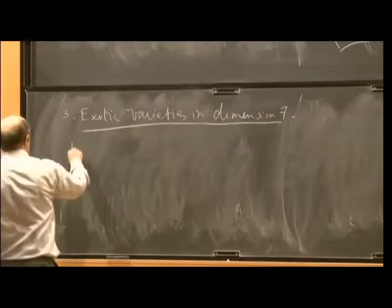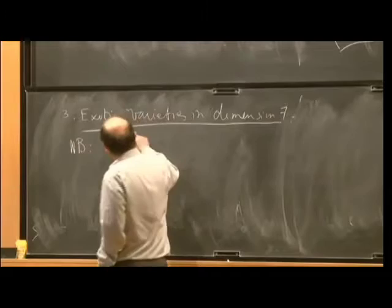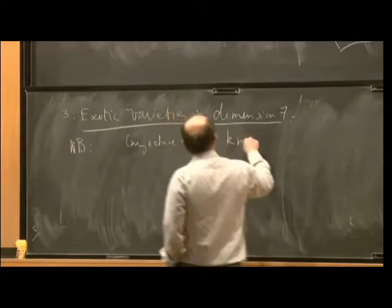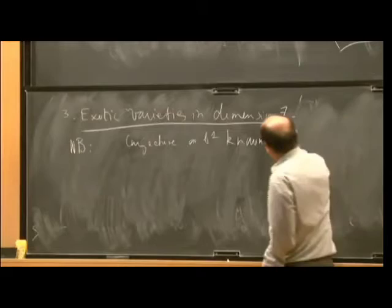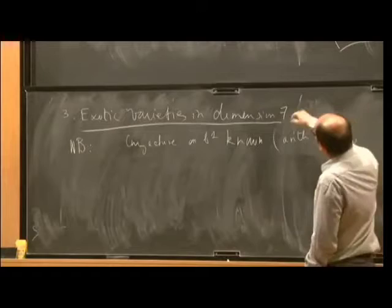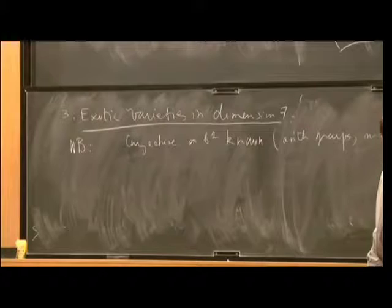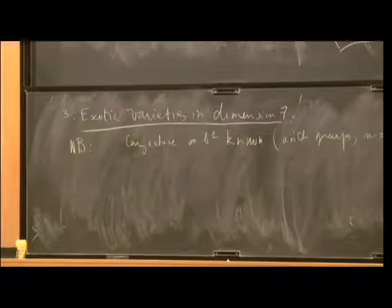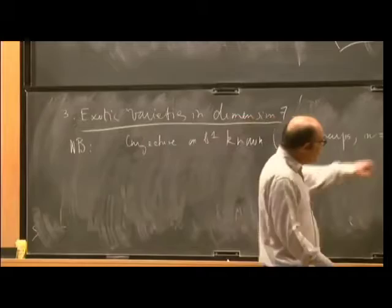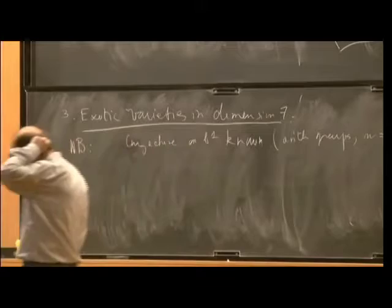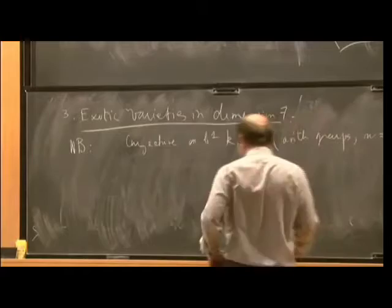So the third part is exotic varieties in dimension seven. So I just explained this conjecture on B1, and whomever it's due to, it's known for arithmetic groups at least, for all dimensions. So my dimension was n, different from three or seven. So, of course, the case of three varieties is, of course, the very famous topological question, which apparently the experts believe there will be some progress, and we might see it solved. But I want to consider dimension seven.